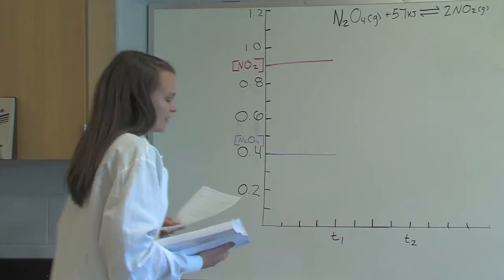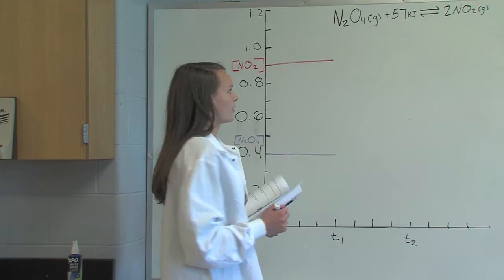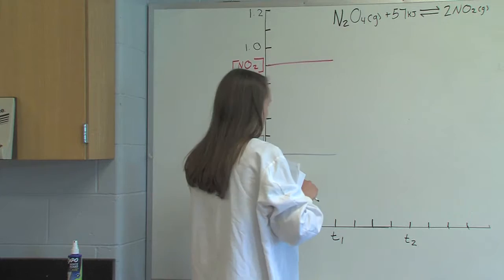When this happens, the decrease in 2NO2 will be twice as much as the increase in N2O4 because the coefficient is 2 here and 1 here.